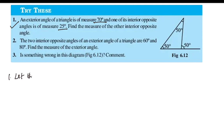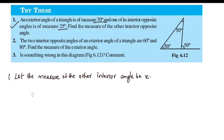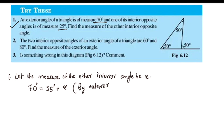Let the measure of the other interior angle be x. By the exterior angle property, x is equal to the sum of its two interior opposite angles.